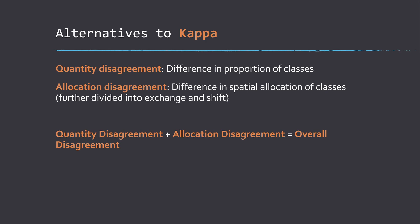Effectively, this takes overall error and breaks it into two components: difference in proportion of classes and then difference in the spatial allocation or location of the classes, which can be further broken into exchange and shift components. If you take quantity disagreement and allocation disagreement and add them together, you get overall disagreement or basically 1 minus overall accuracy, so the inverse there.